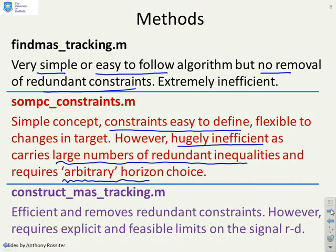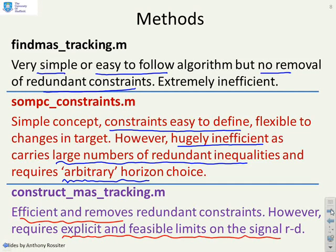The final method, construct_MAS_tracking, gives the minimal number of constraints required to capture the MCAS. However, to work well, it requires explicit and feasible limits on the signal R-D — and that is the key difference. If you don't give sensible limits on the signal R-D, this code could be very, very slow.